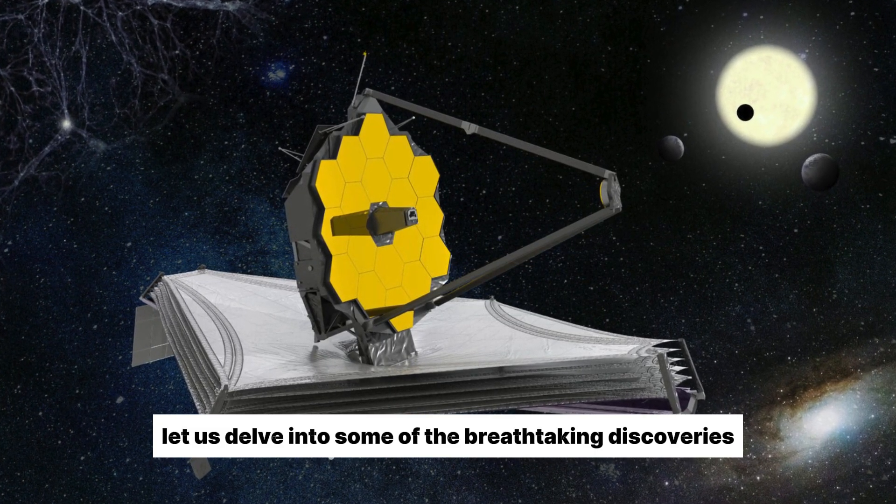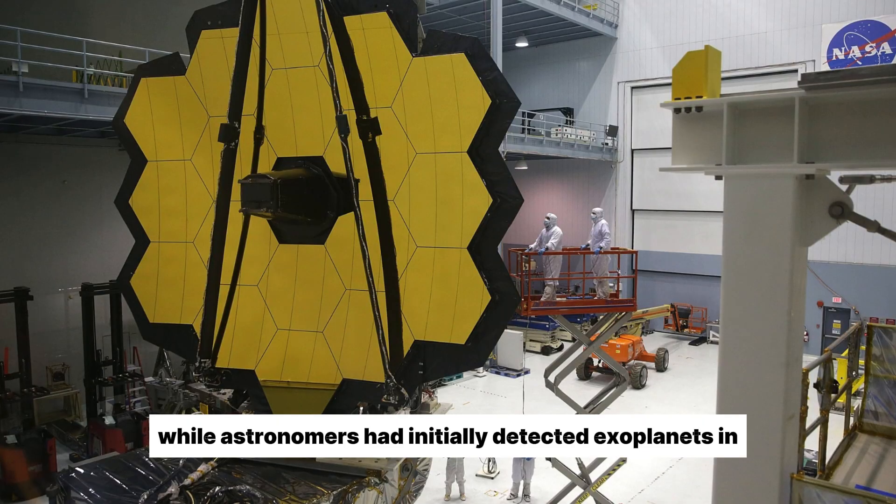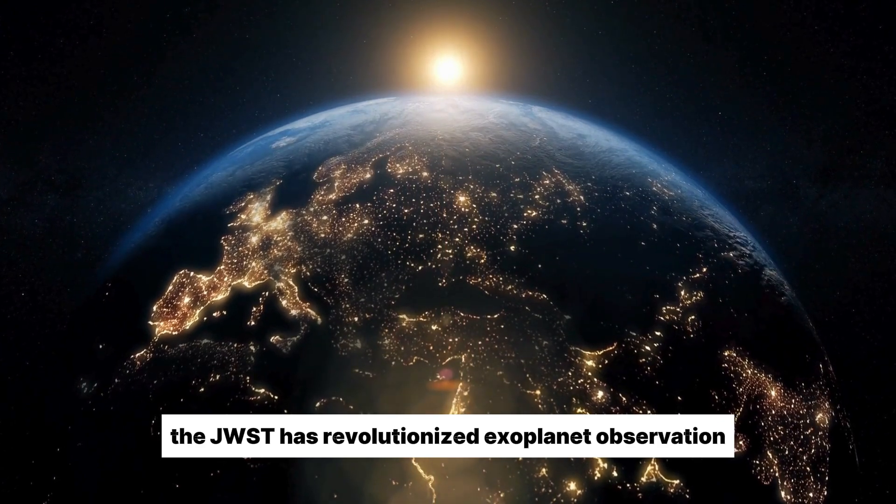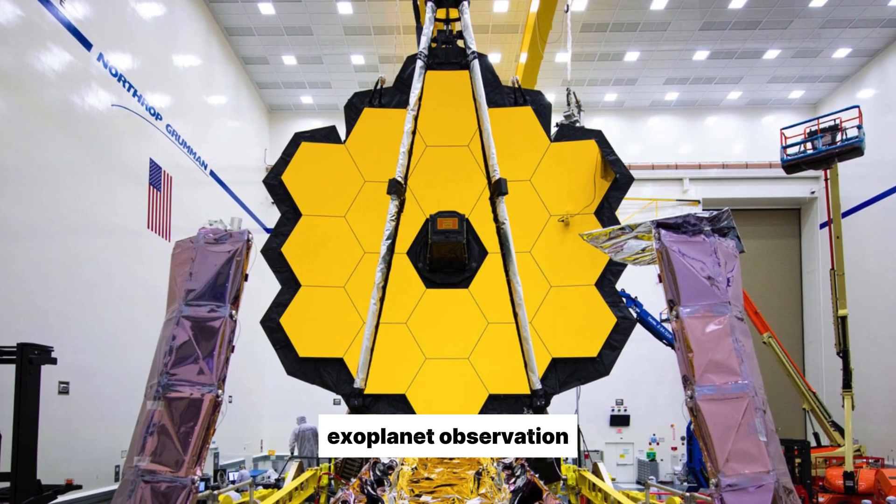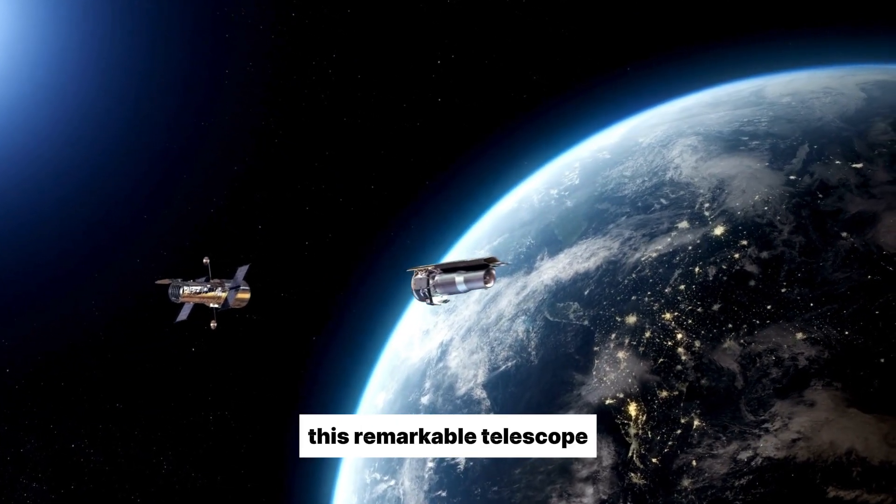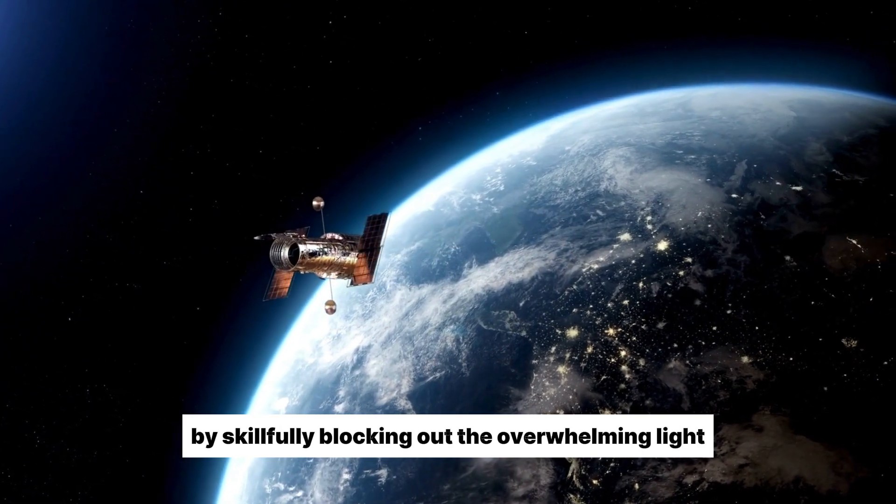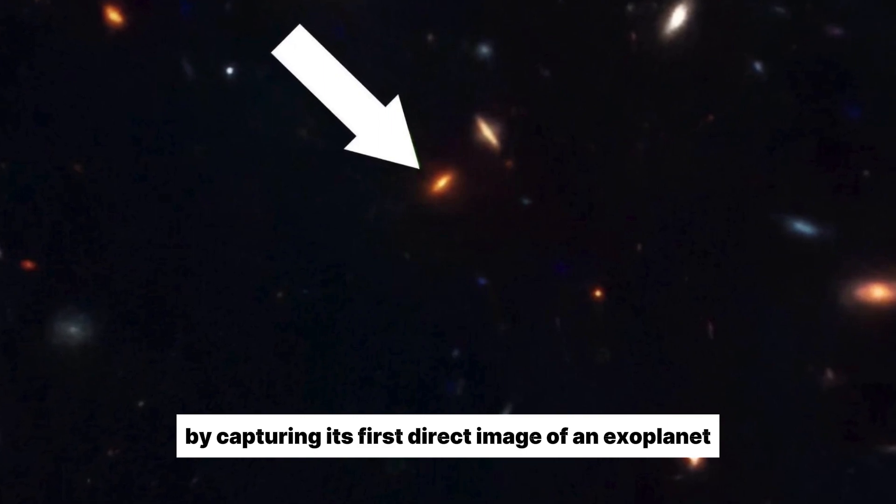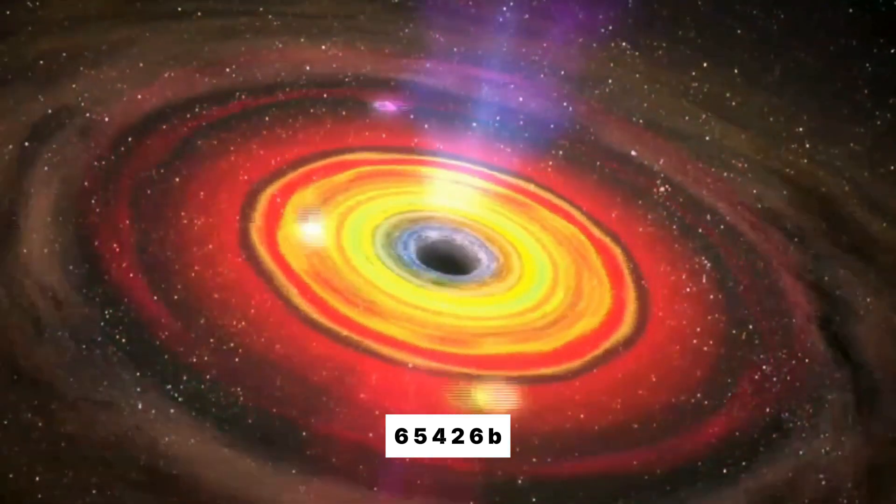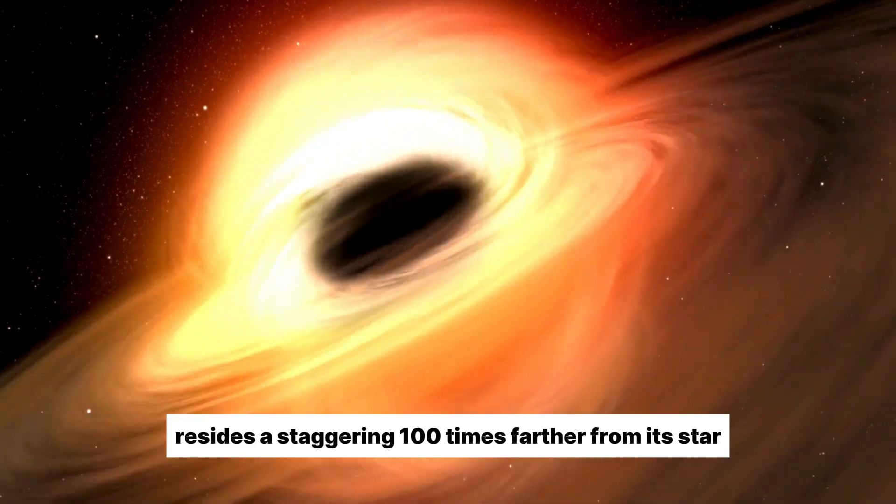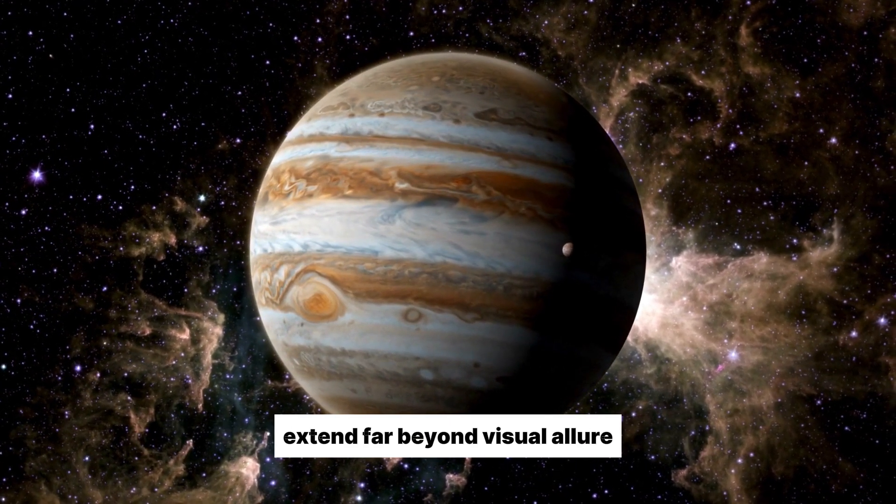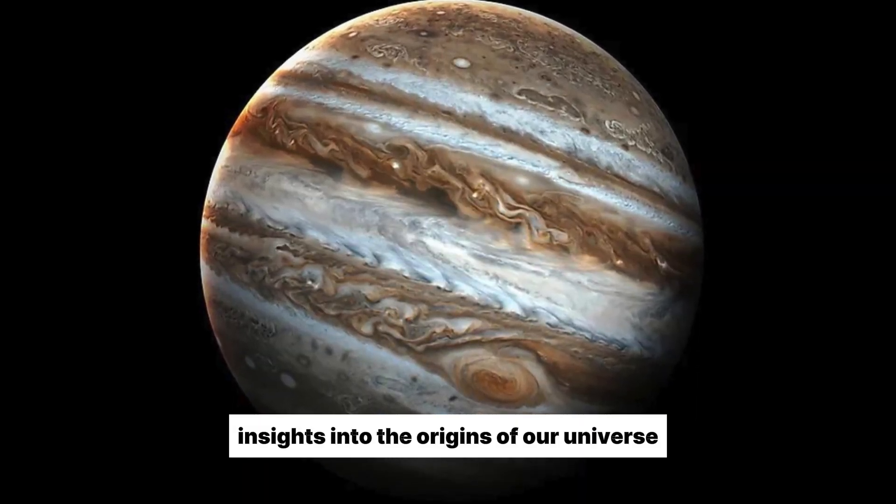Let us delve into some of the breathtaking discoveries made by the James Webb Space Telescope thus far. While astronomers had initially detected exoplanets in the 1990s by observing the slight dimming of a star when a planet passed in front of it, the JWST has revolutionized exoplanet observation. Armed with advanced instruments, this remarkable telescope can directly capture images of exoplanets by skillfully blocking out the overwhelming light emitted by their host stars. Within a year of its launch, the Webb Telescope achieved a historic milestone by capturing its first direct image of an exoplanet, known as HIP 65426 b. This gas-giant planet resides a staggering 100 times farther from its star than Earth does from the Sun.